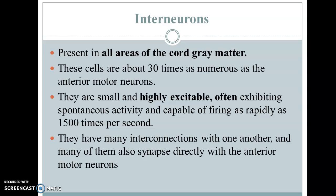Coming to the third type of neuron — interneurons. They are present in all areas of the grey matter. These cells are numerous, about 30 times more than the motor neurons. They are very small, highly excitable, and spontaneous in activity, firing as rapidly as around 1500 times per second. As the name suggests, they have interconnections with one another and many also synapse directly with the anterior motor neurons, forming a meshwork that integrates information from every site of the CNS.